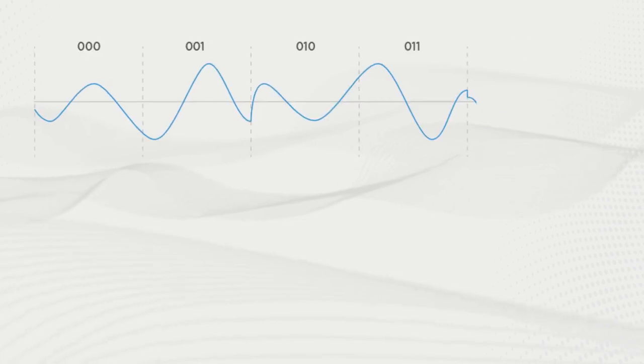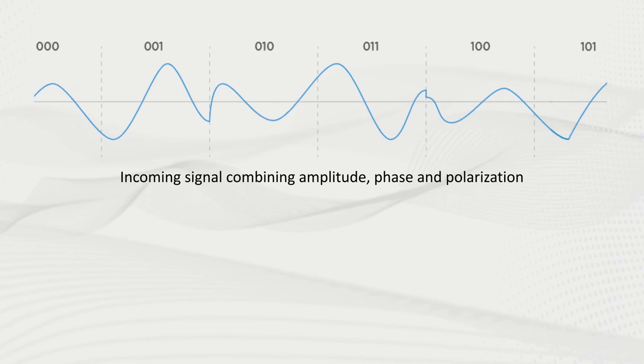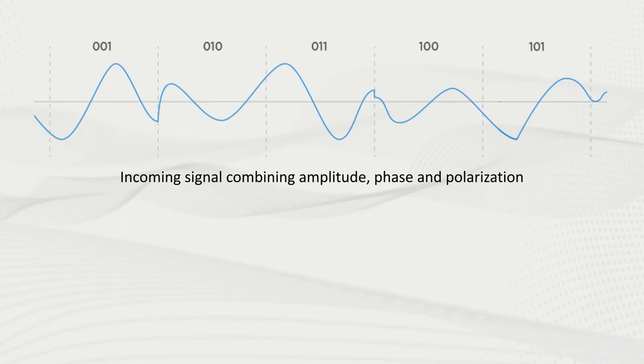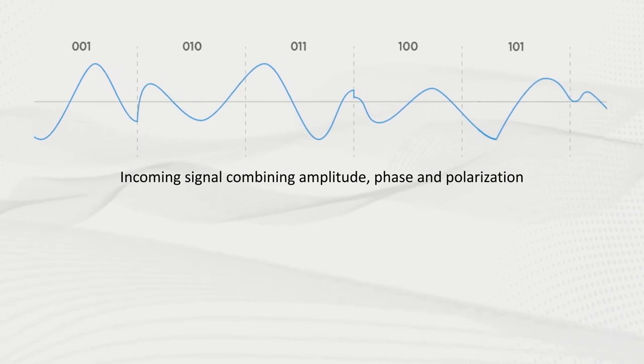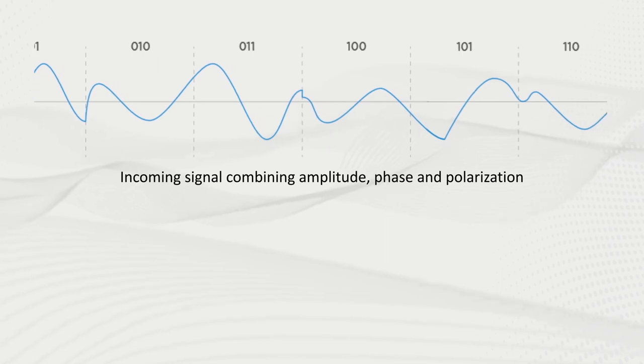By combining amplitude, phase, and polarization changes, we can encode three bits in the same time span where in direct detection we would normally encode one bit. This means our data rate has just gone up by eight times, since with three bits you can encode eight different combinations.